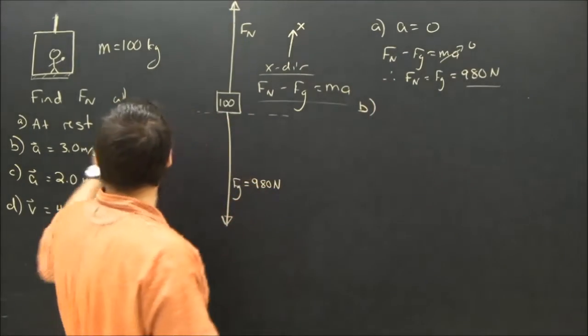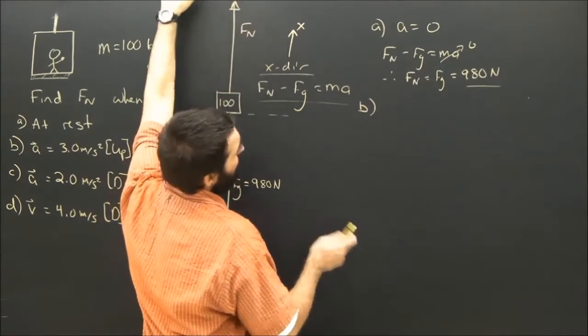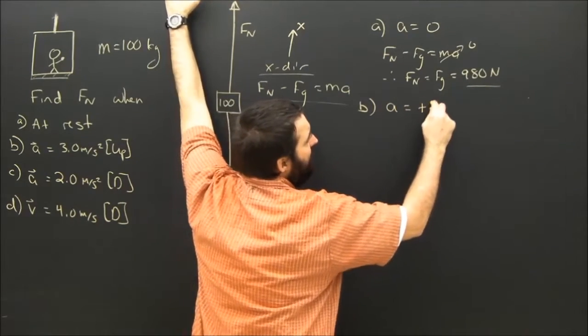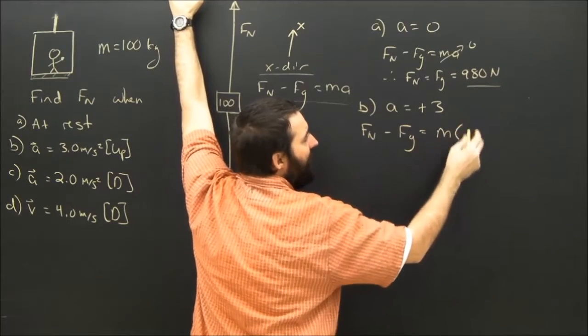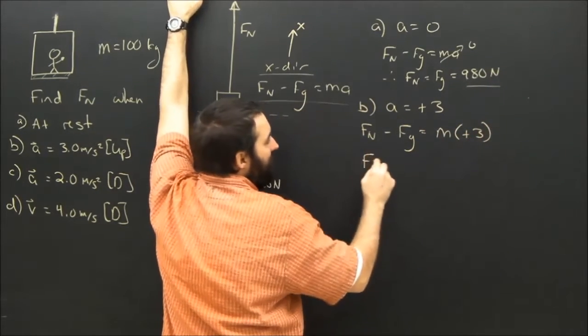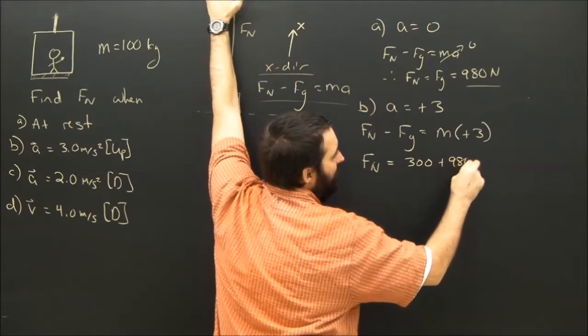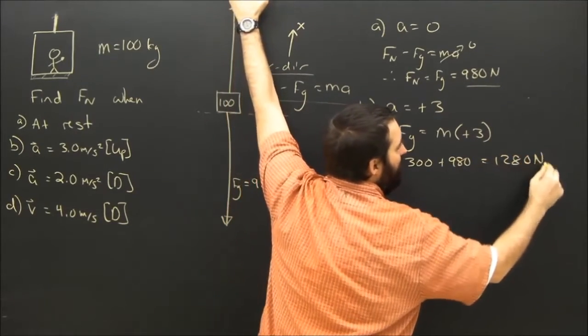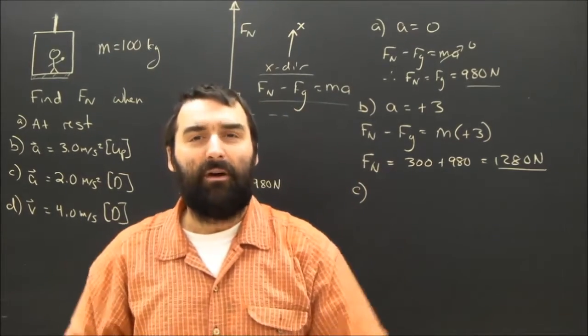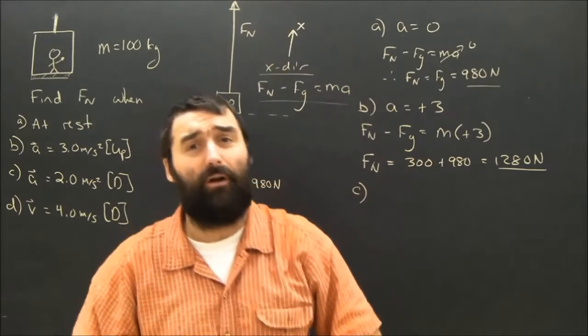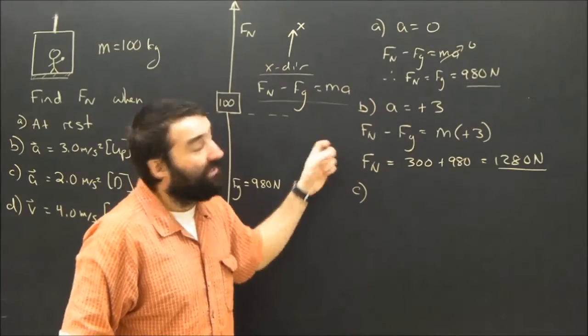What about part B? In part B, the elevator is accelerating up at 3 meters per second squared. I called x up. I'm saying positive is up, so my given here is that A is going to be positive 3. I go back to the same equation. Fn minus Fg equals Ma, but instead of A, I'm going to put in positive 3. So when I rearrange, I get 300 plus 980, means the normal force is 1280. And hopefully that makes a lot of sense. The elevator is accelerating up. The person feels a bit heavier. The floor is pushing up on the person harder than usual. You feel a bit heavy.